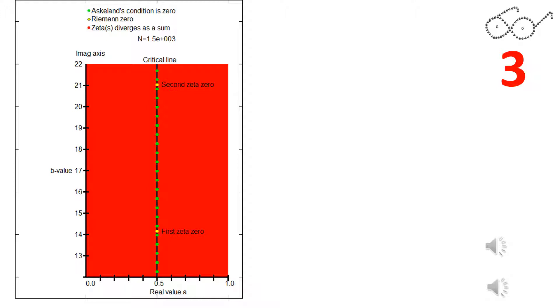As the animation proceeds, you will see that as n increases towards infinity, the zeros of Askeland's condition will cover all zeros of the zeta function and prove Riemann's hypothesis.